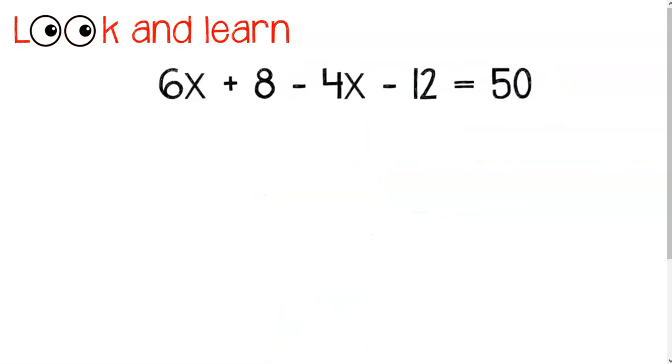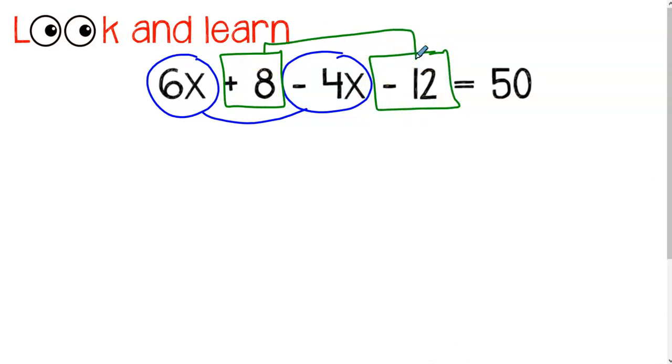I think you're ready to try something a little bit harder. So in this problem, I actually have four terms on the left-hand side. So I'm going to circle my variable terms. Again, being very careful to circle the operation or sign in the front. And I'm going to put squares around my constant terms or rectangles here. And that shows that these two things are separated, are combined differently. Constants with constants. Variable terms with variable terms.